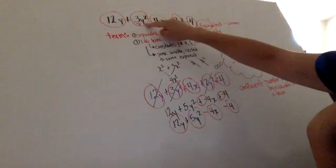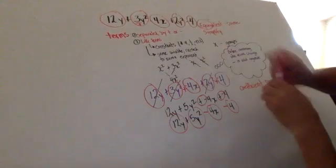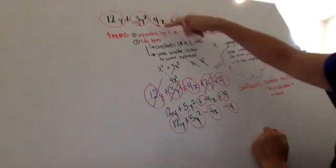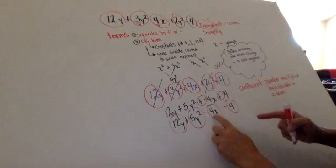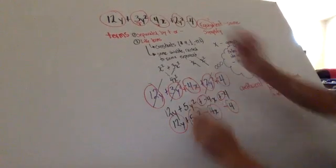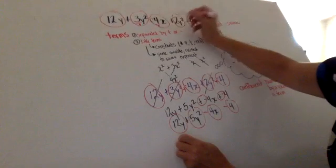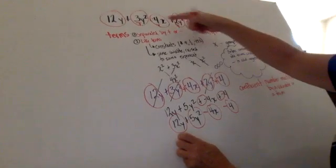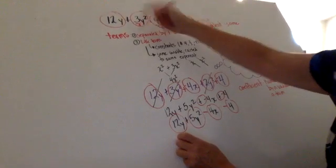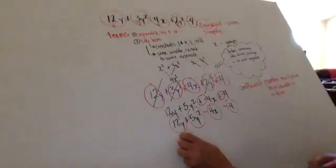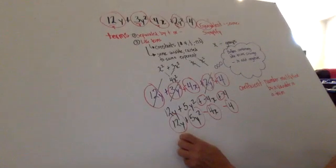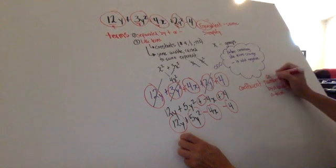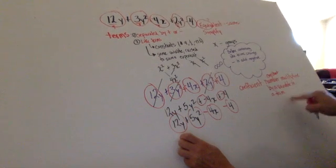So this is a term, this is a term, this is a term. So if I look at these are the coefficients. Now be careful here. And that's another reason why I do it because this coefficient is not four. It's actually negative four. This coefficient is actually negative four. Just like this one has a coefficient, it's positive two. This one's negative four. This one's positive three. And this is positive 12. Coefficients are constants. They are not variables because it's a number or a constant multiplied by a variable.